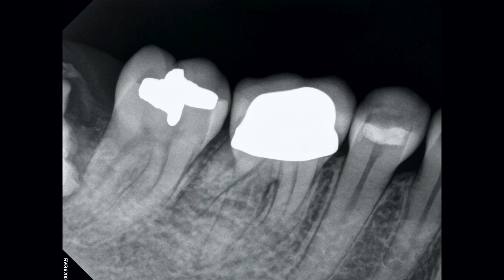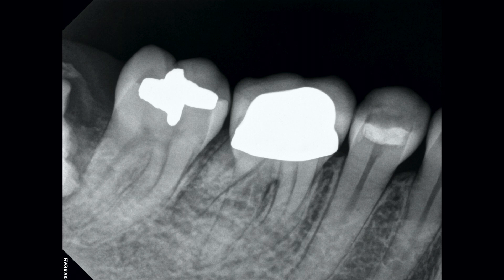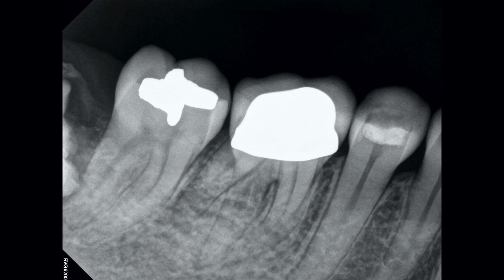Tooth number 30, lower right 6, was sent to me for treatment and evaluation. The patient was seen on an emergency basis because of severe pain, rated 8 out of 10 on the visual analog scale, localized to tooth number 30. A full coverage restoration was recently placed about three months ago, and I diagnosed this tooth with symptomatic irreversible pulpitis and symptomatic apical periodontitis.